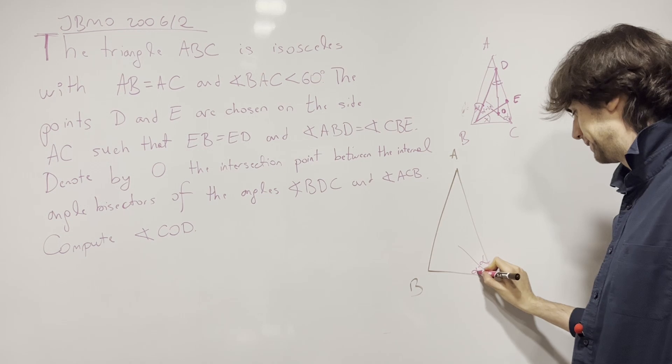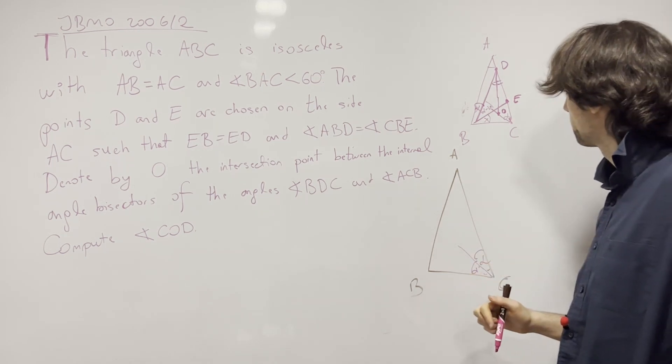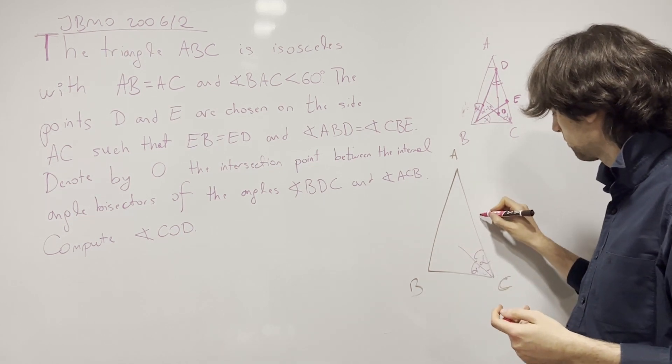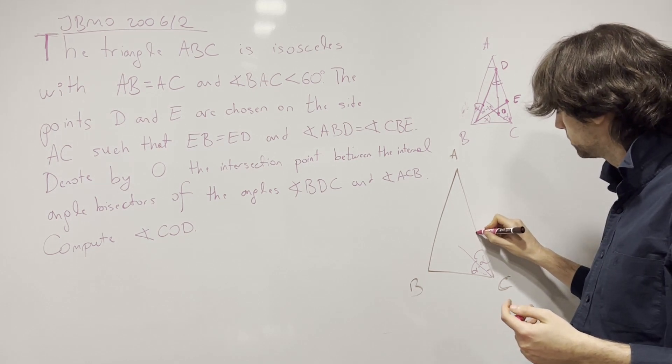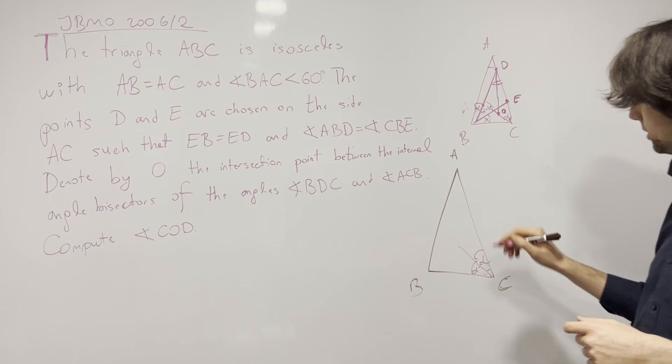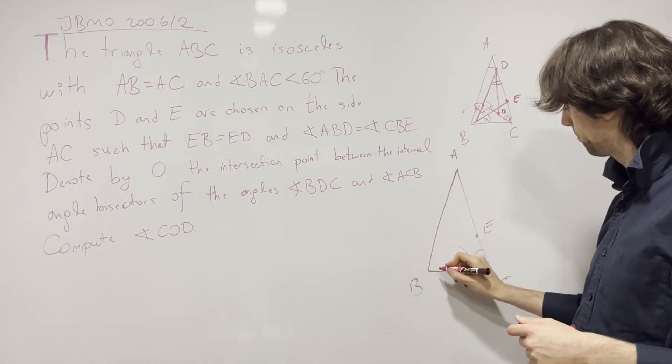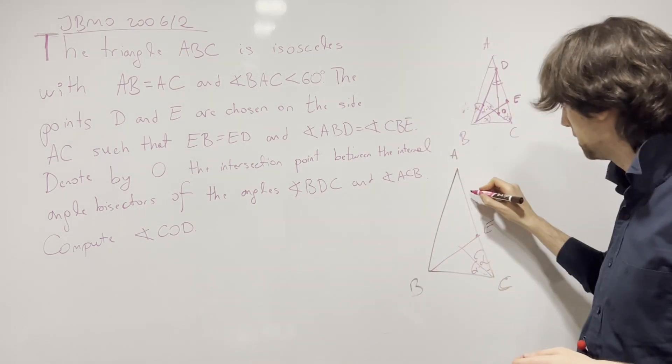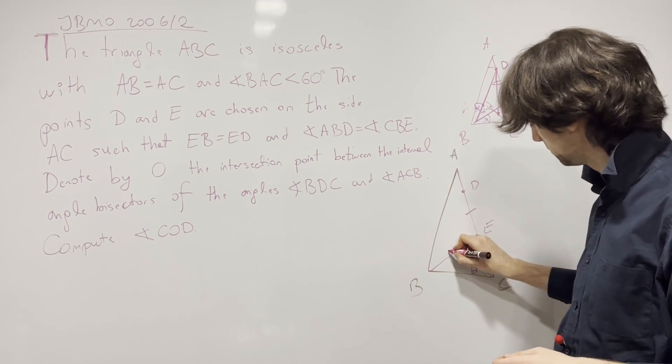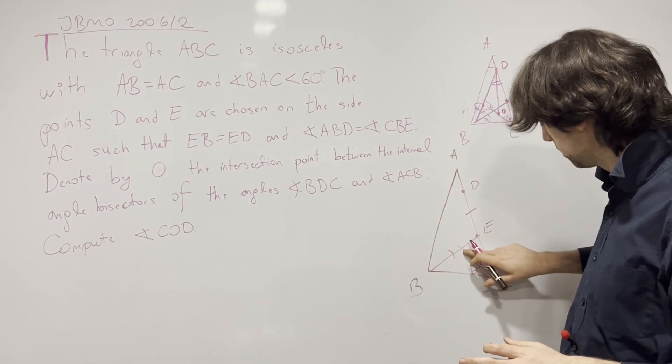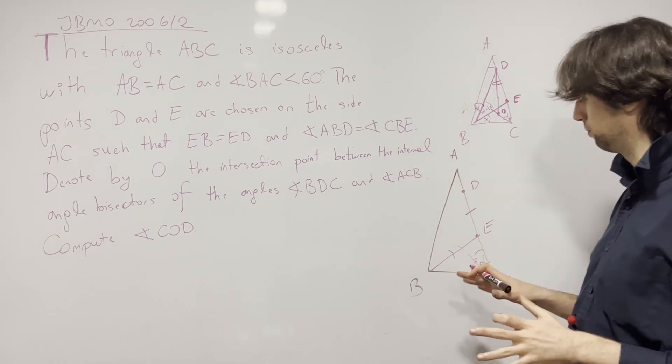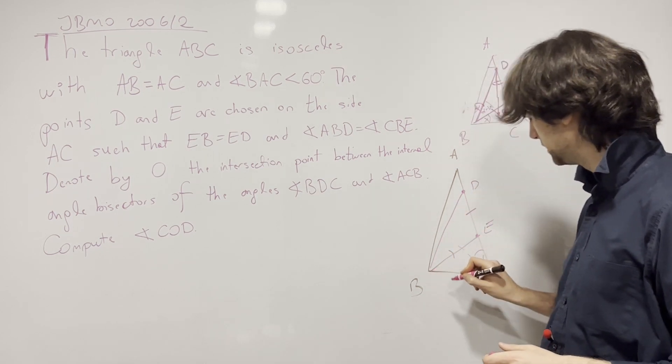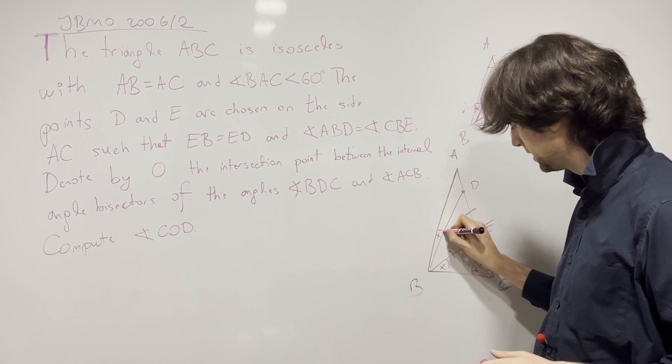I'll have 2 alpha minus 2X here and then alpha and alpha. What you name these things is not important, unless it helps you in some way shape or form to better deal with the problem. And now this point E has an interesting condition. So point E is here such that EB equals ED.